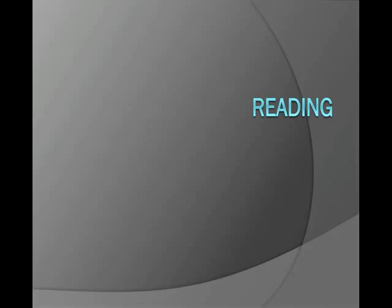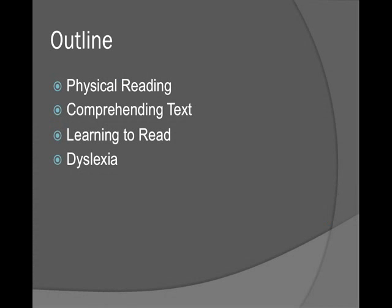In this module we're going to talk about reading: how we learn to read, how we have trouble with reading, and what reading is. We'll cover the physical aspects of reading, how our eyes move, how people comprehend text through discourse processing, and how we learn to read. Module 15.2 covers dyslexia, which is problems with reading.